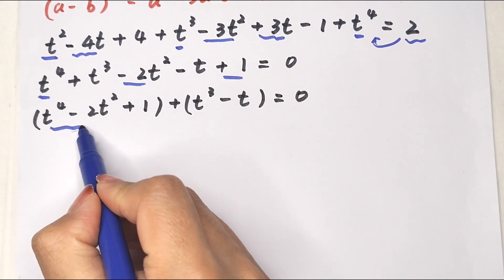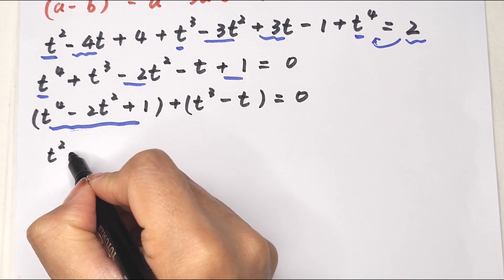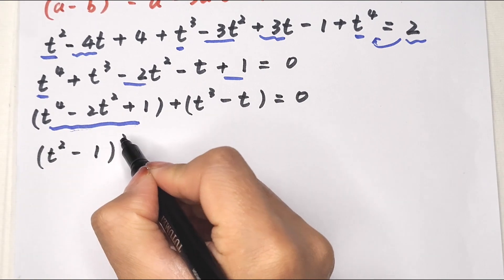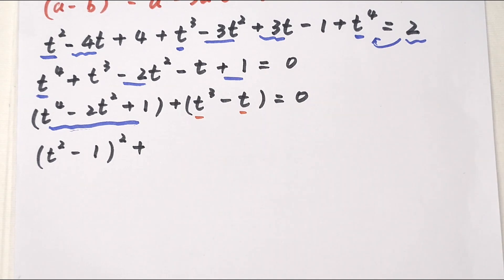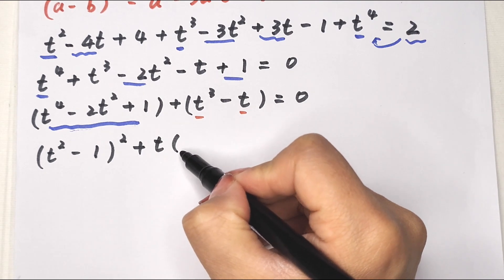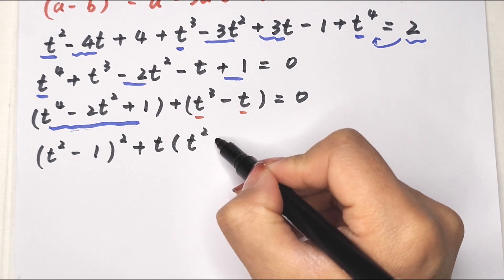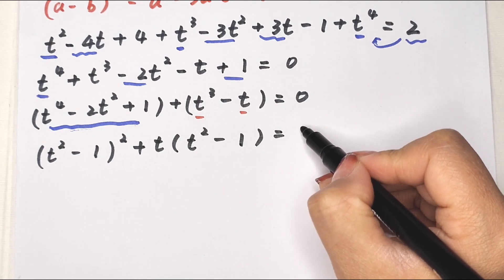This can be grouped and factored. The part t to the power of 4 minus 2t squared plus 1 is the same as (t squared minus 1) squared. And the remaining part t cubed minus t has t as a common factor, so we take t out: t times (t squared minus 1).